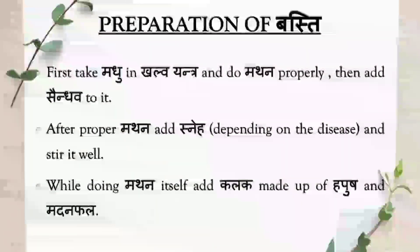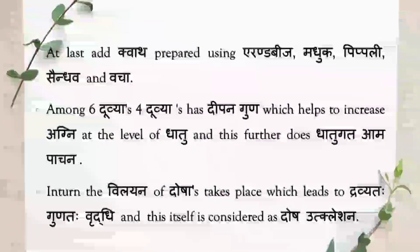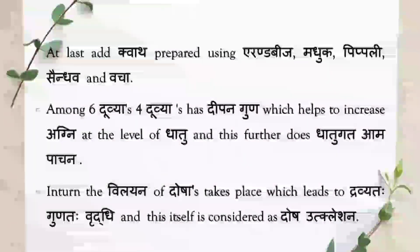Now let us see the preparation of the basti. First of all, take the madhu in the kalva yantra and do mathana — meaning mix it properly. Then add Saindava to it. After proper mathana, add sneha, which depends on the disease — it might be gruta or thaila. Stir it well. While doing mathana, add Kalka made up of Hapusha and Madanafala. At last, add Kvata prepared using Erandabija, Maduka, Pippali, Saindava, and Vacha.